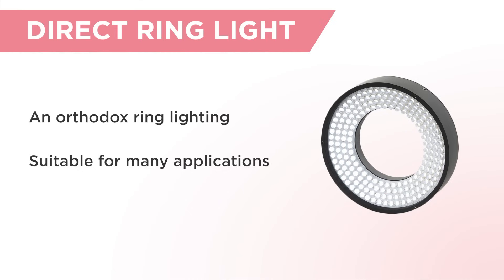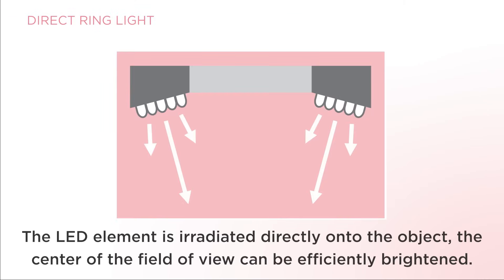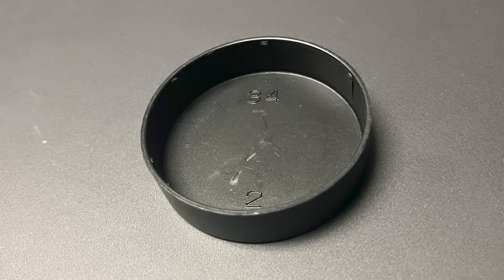Direct ring is an orthodox ring lighting that is suitable for many applications. The installation position is slightly away from the object and close to the camera. Since the light from the LED element is irradiated directly onto the object, the center of the field of view can be efficiently brightened.